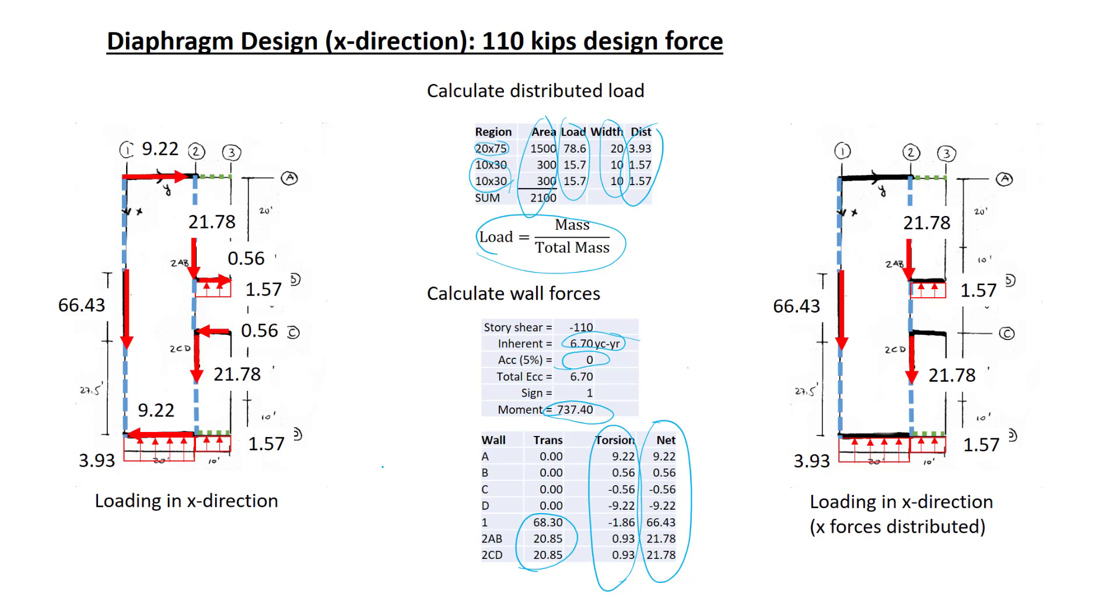Talking for instance about the force on line A, 9.22 kips, I'll consider it being distributed over the length that it can be distributed. Similarly, the 0.56 kips along grid line B, I'll also consider that being distributed along the whole length that it can be distributed. The 9.22 kips was distributed over this length of 20 feet. The 0.56 kips was distributed over this length of 30 feet.